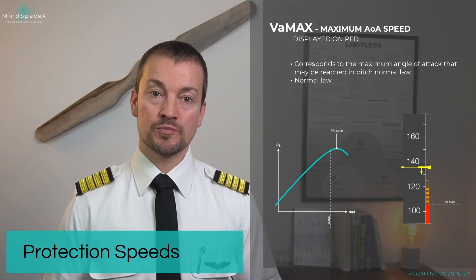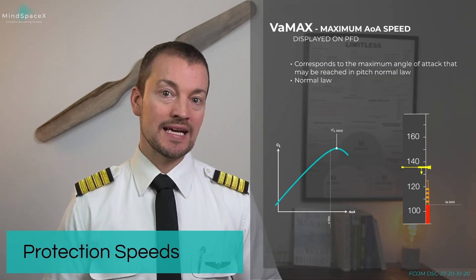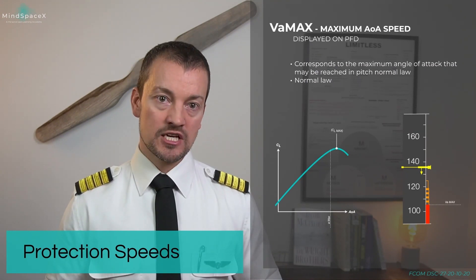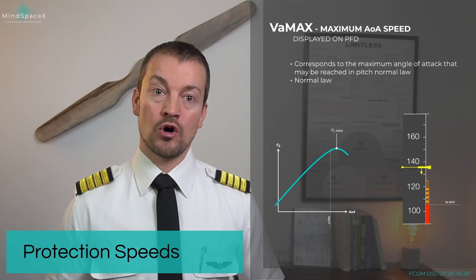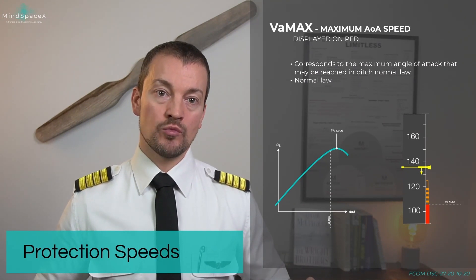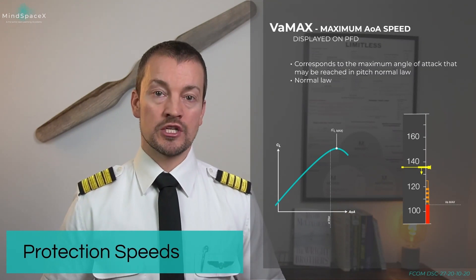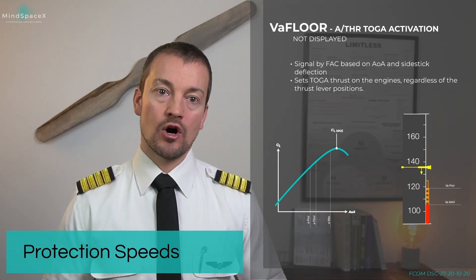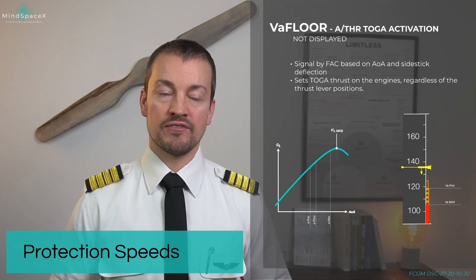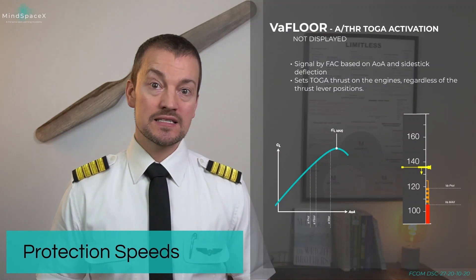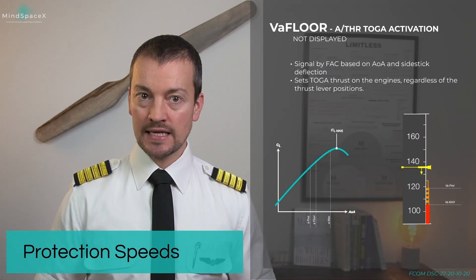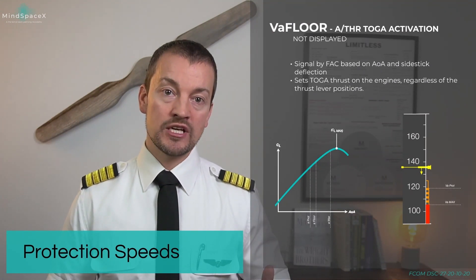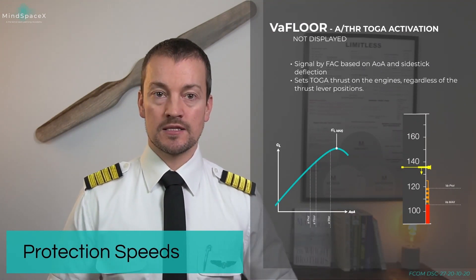V-alpha max corresponds to the maximum angle of attack that may be reached in pitch normal law. V-alpha protection is only available in normal law and is the first protection we lose if we go into alternate law. What is not indicated to the pilots on the PFD is V-alpha floor. This is again something calculated by the FAC, but it is in fact something that is operational from the autothrust system.